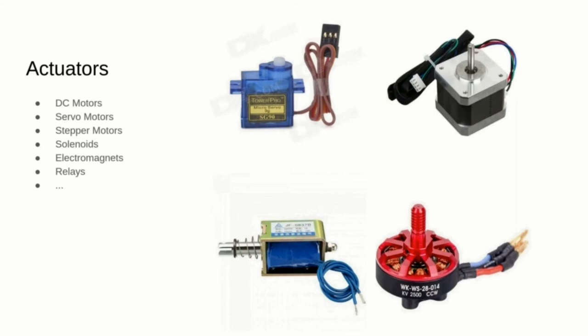Servo motors can move in a range of usually 180 degrees depending on the input pulse width modulation signal. They are very useful to articulate joints in robots — make sure to know the torque your application needs. Stepper motors can move with a very specific number of degrees when controlled with their full digital pin system. They are used in machines that need to move to a very specific position, like printers or vending machines.